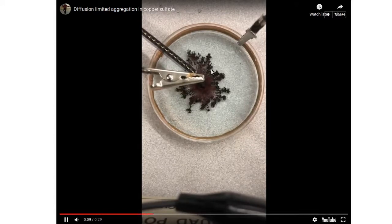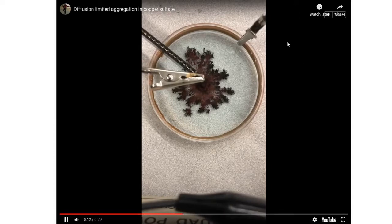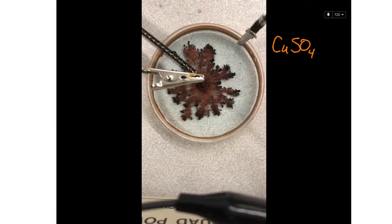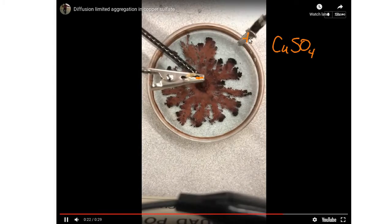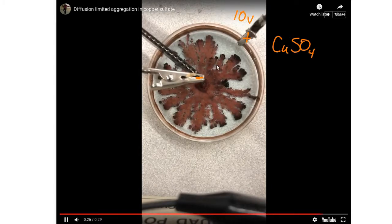To remind you what we're doing here, in the solution we have copper 2 sulfate, so that's CuSO4. And we've attached a negative electrode here in the center, positive electrode on the edge. Here we were using a 10 volt potential difference between the two.